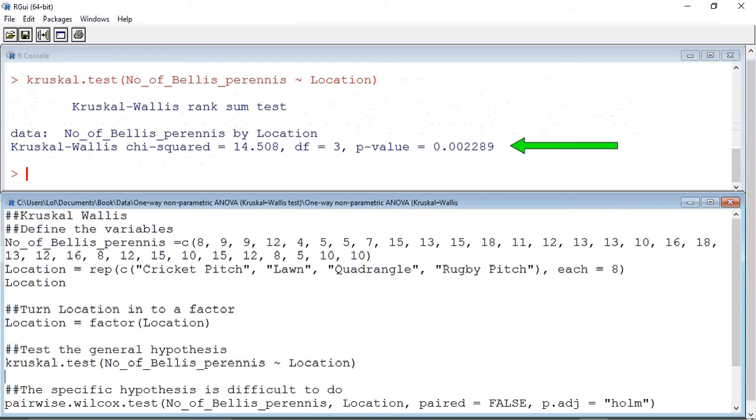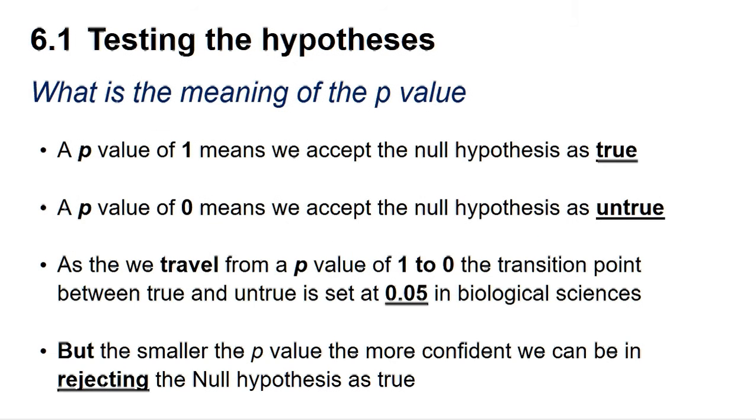So what is the meaning of the p-value? A p-value of 1 means we can accept the null hypothesis as true, whereas a p-value of 0 means we can accept the null hypothesis as untrue. As we travel from a p-value of 1 to 0, the transition point between true and untrue is set at 0.05 in the biological sciences. The smaller the p-value below 0.05, the more confident we can be in rejecting the null hypothesis.